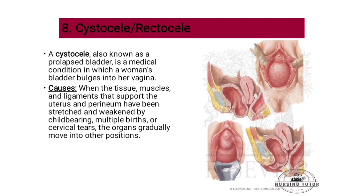Cystocele, also known as prolapsed bladder, is a medical condition in which a woman's bladder bulges into her vagina. This occurs when the tissues, muscles, and ligaments that support the uterus and perineum have been stretched and weakened by childbearing, multiple births, or cervical tears.